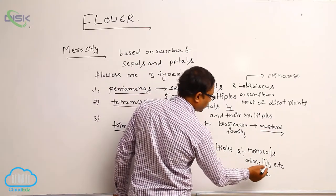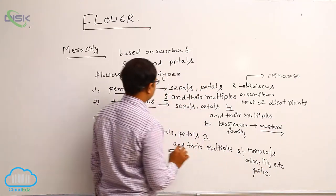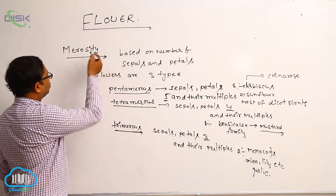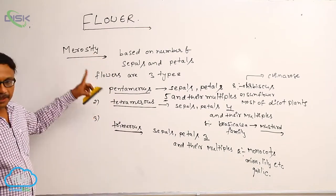Example, onion, lily, garlic, etc. These are the points about merocity.